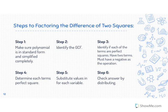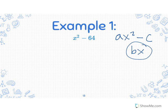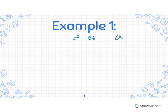Here are all our steps — we're going to go over these in our examples. Our first example: x squared minus 64. First, make sure it is in standard form. We see that we have x squared minus 64, which is ax squared minus c, so we are missing our bx term. The reason we are missing it is because when we distribute, the middle terms cancel each other out. Step two: identify any GCFs — we don't have any, so we skip step two.